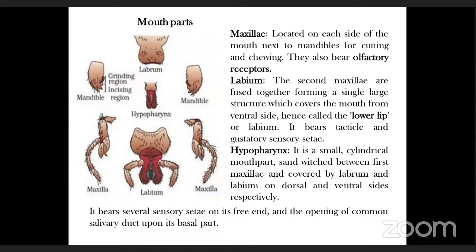The third type of mouthpart is maxillae, located on each side of the mouth just next to the mandibles, used for cutting and chewing. They also bear olfactory receptors responsible for the sense of smell. Labium is also called the second maxillae because the first pair of maxillae gets fused to form a single large structure, forming the ventral side of the mouth — hence it is called the lower lip.